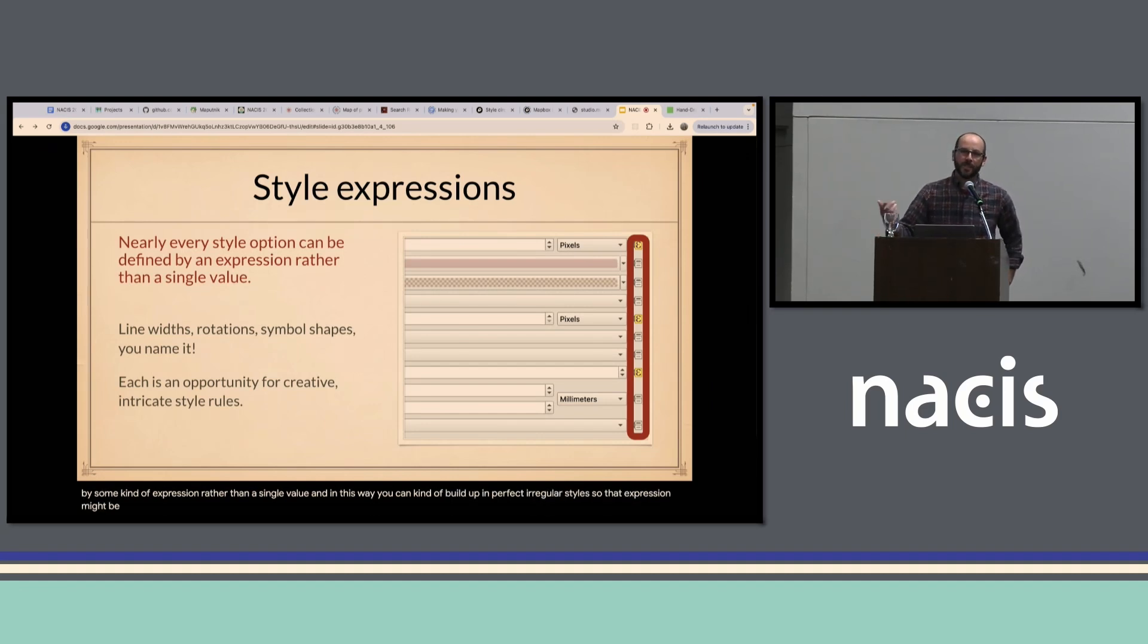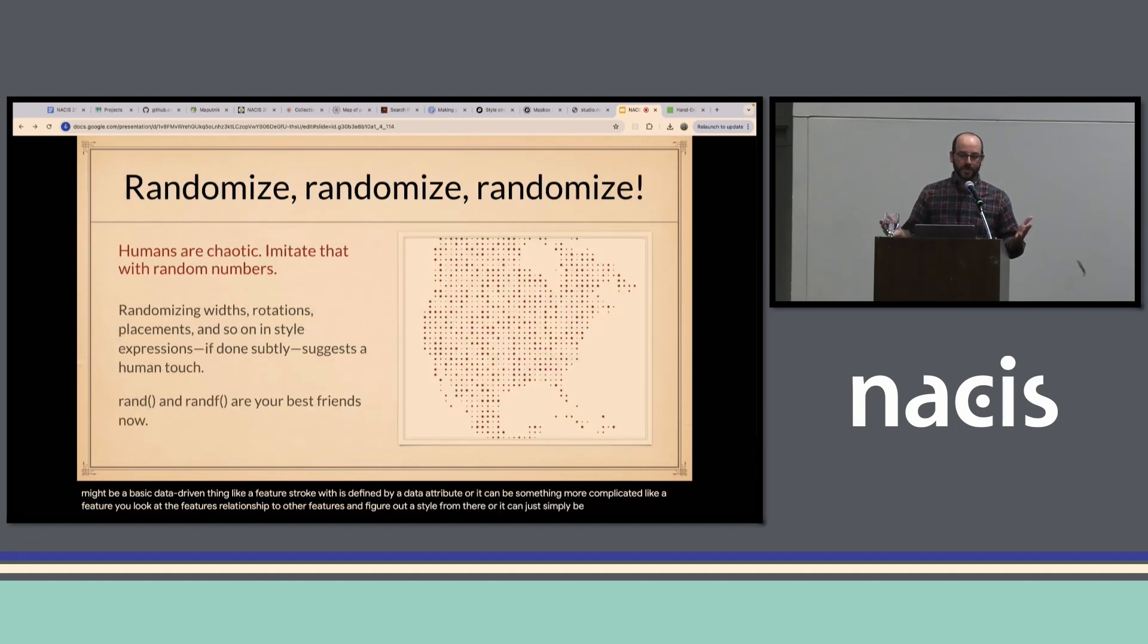In this way, you can kind of build up imperfect, irregular styles. So that expression might be a basic data-driven thing, like a feature's stroke width is defined by a data attribute, or it can be something more complicated, like looking at a feature's relationship to other features and figure out a style from there. Or it can just simply be random numbers, and this is the way to add some human chaos. These expressions are evaluated for every instance of a symbol that they're applied to. So for example, this dot pattern map here, every single dot has some randomization to its rotation and size and so on. If you have a sufficiently complex style, you can really randomize your way to some human chaos.